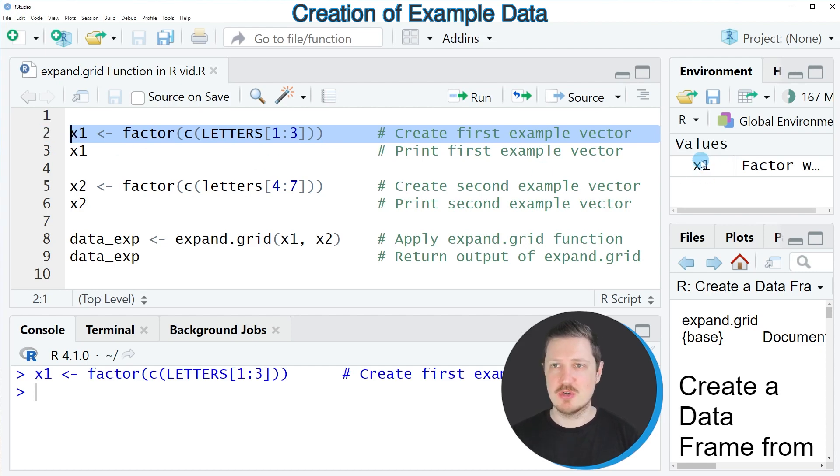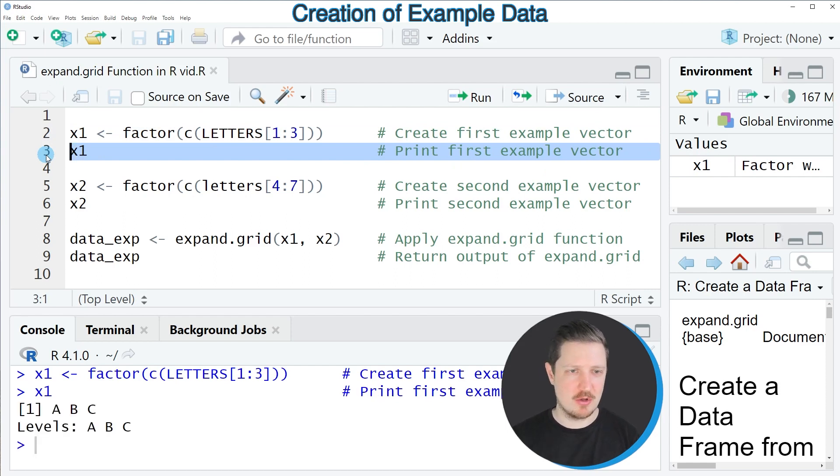So after running this line of code, our first data object x1 is appearing at the top right, and we can print the content of this data object to the RStudio console by running line 3 of the code. Then you can see at the bottom that our first example data object is a vector that contains the characters A, B, and C.